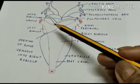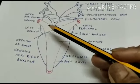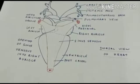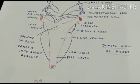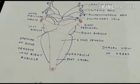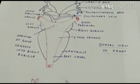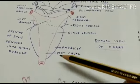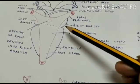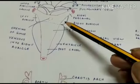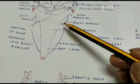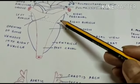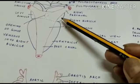The left auricle receives pure or oxygenated blood from the pulmonary vein, and the pulmonary vein opens into the left auricle by an aperture. On the ventral surface of the right auricle is present a thickening which is known as the sinoauricular node, also known as the pacemaker, because it initiates the contraction of the right auricle.